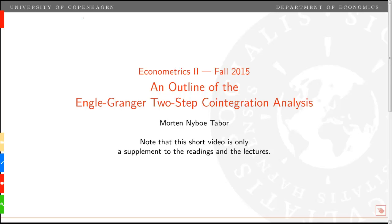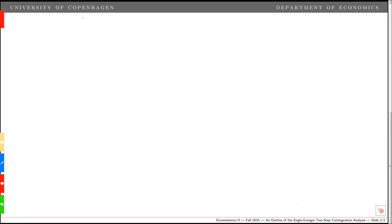In this video we give an outline of the Engel-Granger two-step cointegration analysis. Say that we have two variables, ct and yt, that could be, for example, consumption and income, and we find that they are both i1, so they are unit root processes.